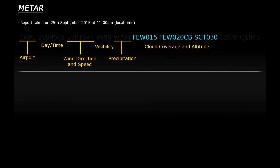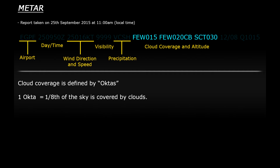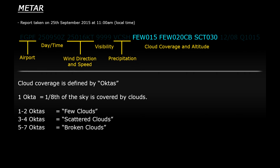Next we have several bits of information relating to cloud coverage. Cloud coverage is defined by octas, or eighths of the sky. If one or two octas of sky are covered this is known as few clouds. Three and four octas are known as scattered clouds. Five, six and seven octas are known as broken clouds and eight out of eight octas is known as overcast, where there is a complete layer of clouds covering the sky. So in our example we have three different layers of clouds. The first one reads FEW015, so that means there are one or two eighths of cloud coverage at 1500 feet.